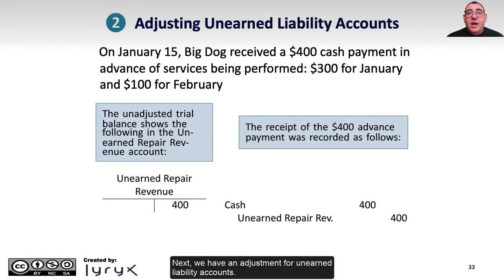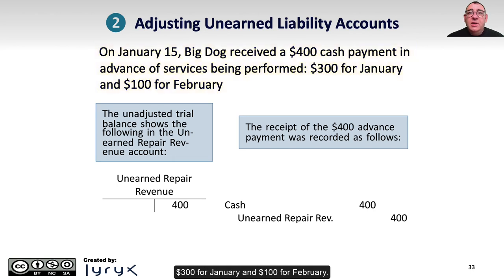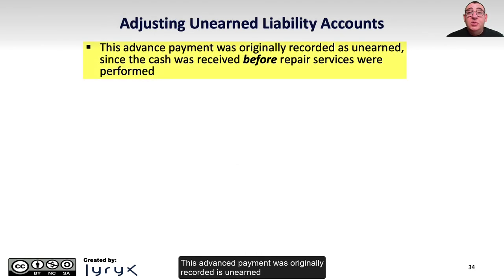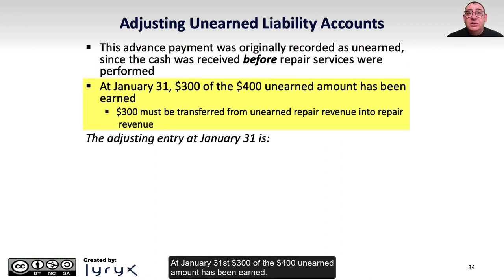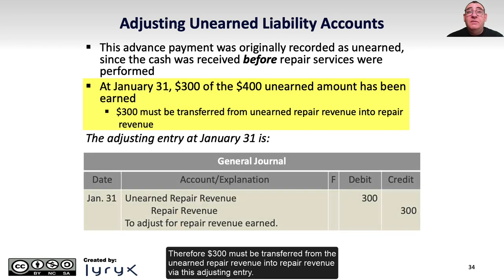Next is the adjustment for unearned liability accounts. Recall that on January 15th, Big Dog received a $400 cash payment in advance of services — $300 for January and $100 for February. This was recorded as a debit to cash and a credit to unearned repair revenue, leaving an unadjusted balance of $400. At January 31st, $300 of that $400 has been earned, so $300 must be transferred from unearned repair revenue into repair revenue via an adjusting entry.